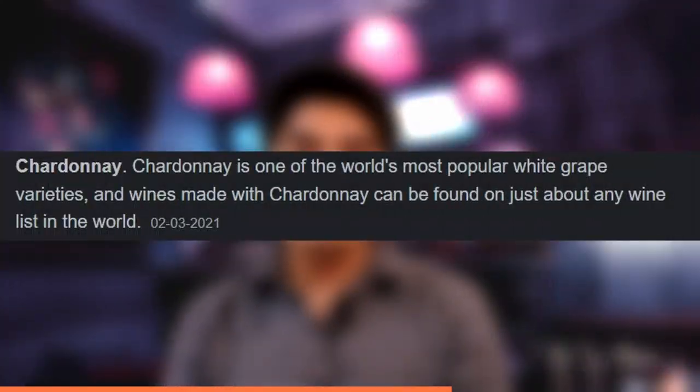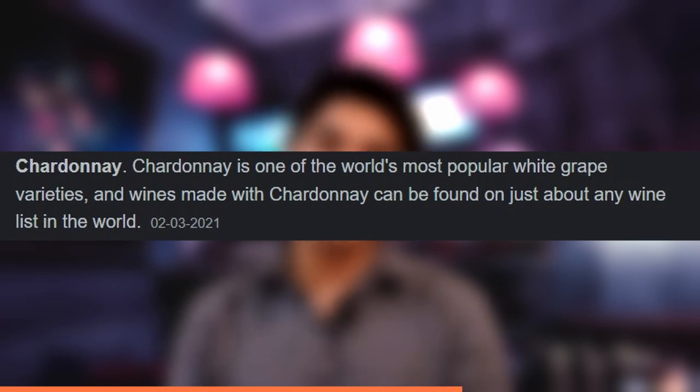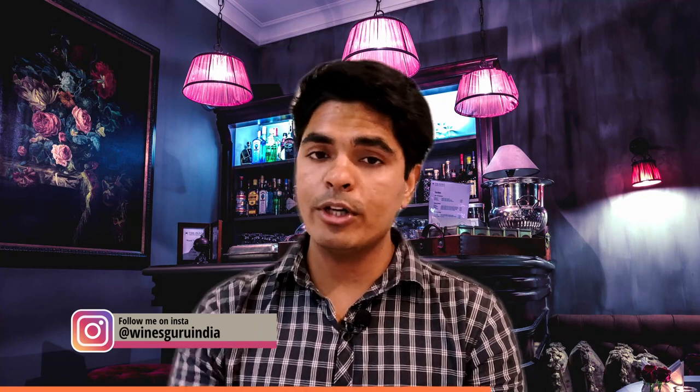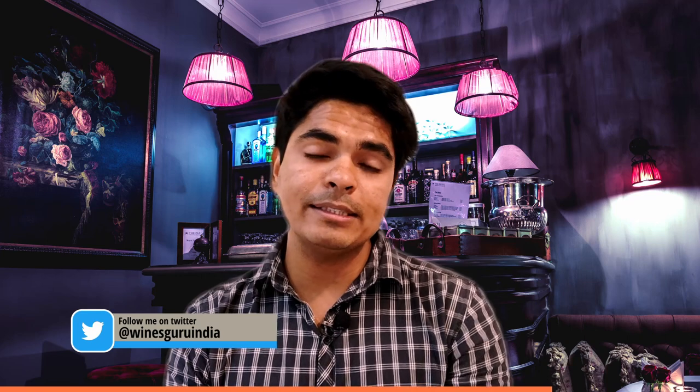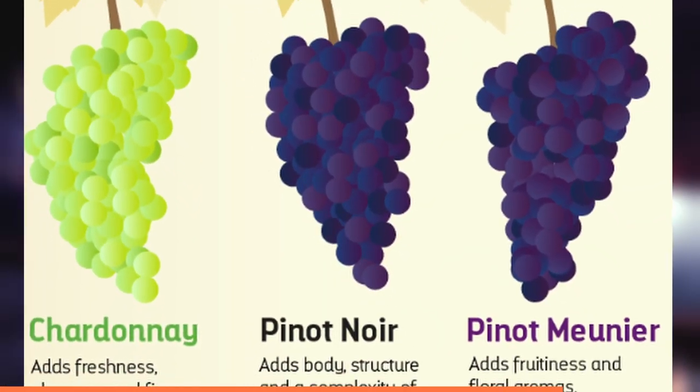Chardonnay is a very popular grape, and the majority of people who consume wine know about it. Chardonnay is one of the major grapes in the making of Champagne and the majority of sparkling wines as well. If you look at Blanc de Blancs, that is made predominantly from Chardonnay. Champagne is made from three major grapes — Pinot Noir, Pinot Meunier, and the third grape is Chardonnay.